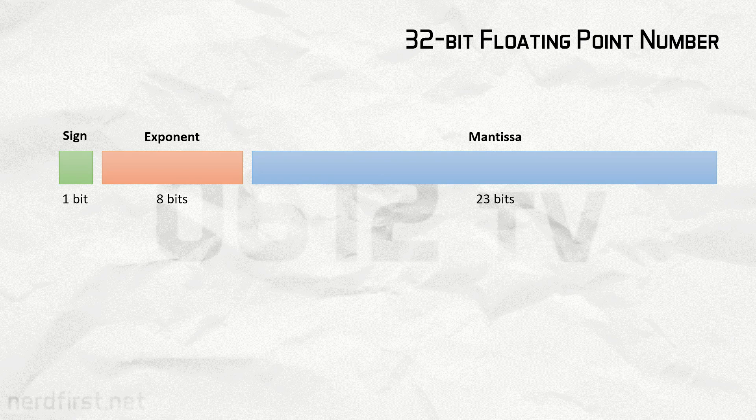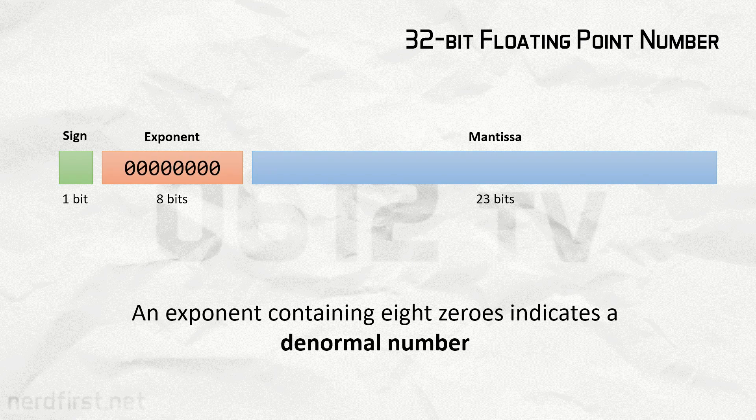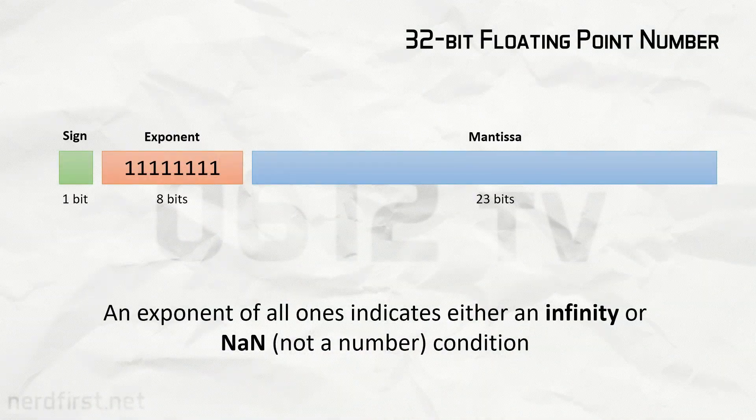Previously, when we did the normal numbers under the floating point series, we saw that if the exponent was all zeros, it indicated something special — we shouldn't have treated it as just a number. These conditions we're looking at today do something similar, but instead of using an exponent of all zeros, they use an exponent of all ones. What this means is we also don't have a so-called maximum exponent of 127. Instead, it's one less, because if you see all ones, it means something different.